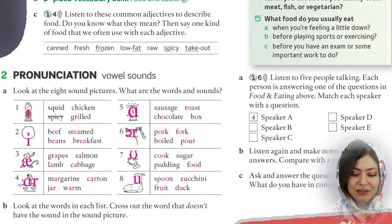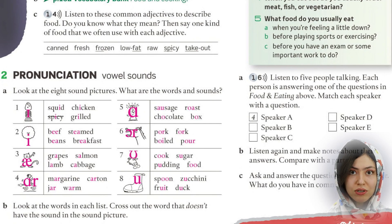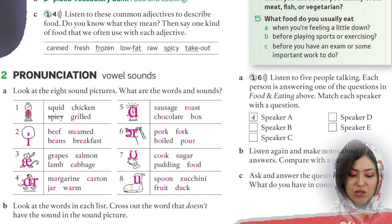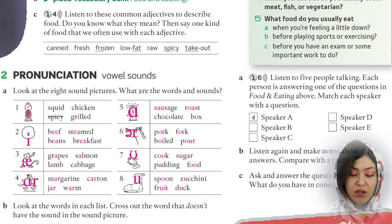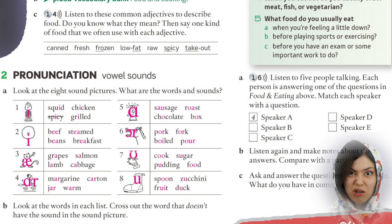The second vowel sound is the long 'E': beef, steamed, beans — these are correct. Breakfast is the odd one out because it does not have the long E sound. The next sound is 'A': grapes is the odd one out here.